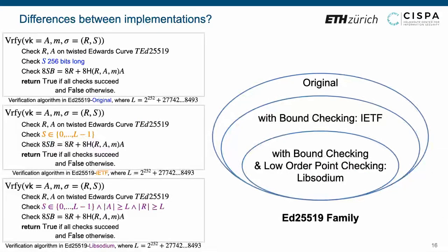Now, we can easily find the differences between these three implementations. Compared to Ed25519 original, the IETF and LibSodium versions involve bounds checking. Namely, the IETF and LibSodium versions check whether the value S is in the range from 0 to L-1. Further, the LibSodium version additionally involves low order point checking. Namely, the LibSodium version also checks whether the points A and R both have order greater than or equal to L. The relation between these three variants is depicted in the Venn diagram right side.